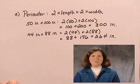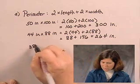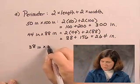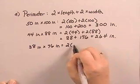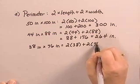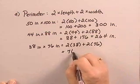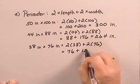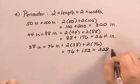And now we find the perimeter of the third table, which was 38 inches by 76 inches. We have two times 38 plus two times 76 inches, which is 76 inches plus 152 inches. Adding that together, we get 228 inches.